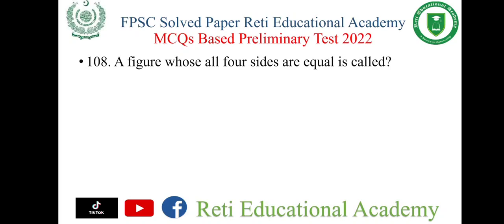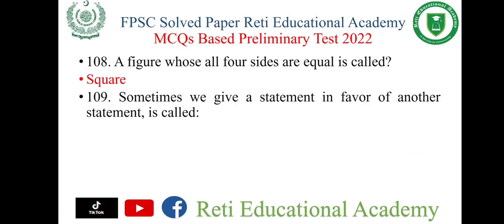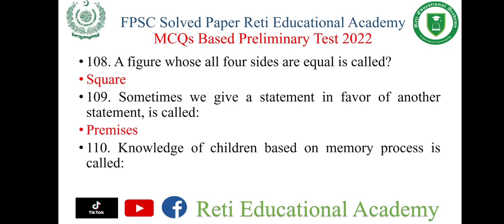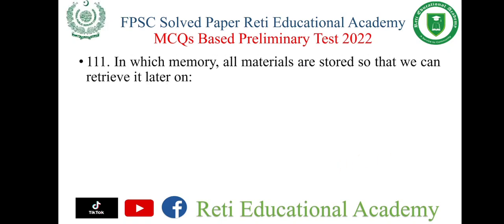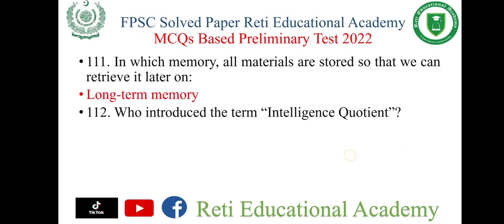Question number 108: A figure whose all four sides are equal is called a square. Question number 109: When we give a statement in favor of another statement, it is called a premise. Question number 110: Knowledge of children based on memory process is called metamemory. Question number 111: In which memory are all materials stored so that we can retrieve it later on? The right option is long-term memory. Question number 112: Who introduced the term intelligence quotient? The right option is William Stern.